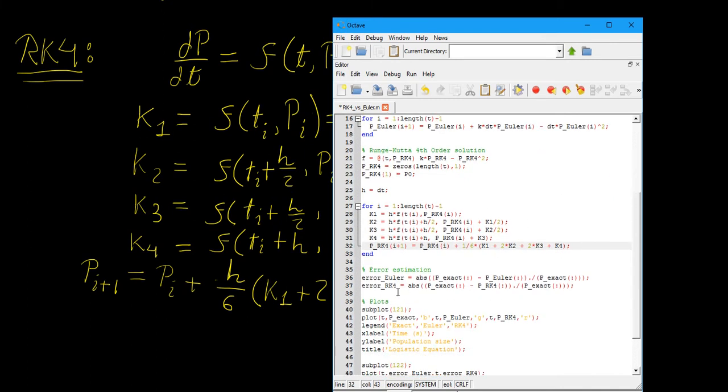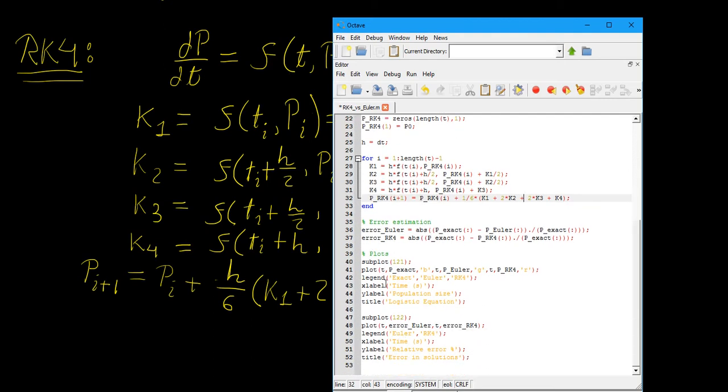For the error estimation, what I did was I wrote an error vector for basically the Euler compared to the exact solution, and then for the rk4 solution compared to the exact. And then I have my plots here. I'm going to plot both of them on the same figure window. I have given them some colors, blue, green, and red, just to differentiate them better. Some labels, and then the same for the error. Let's see what this gives us.